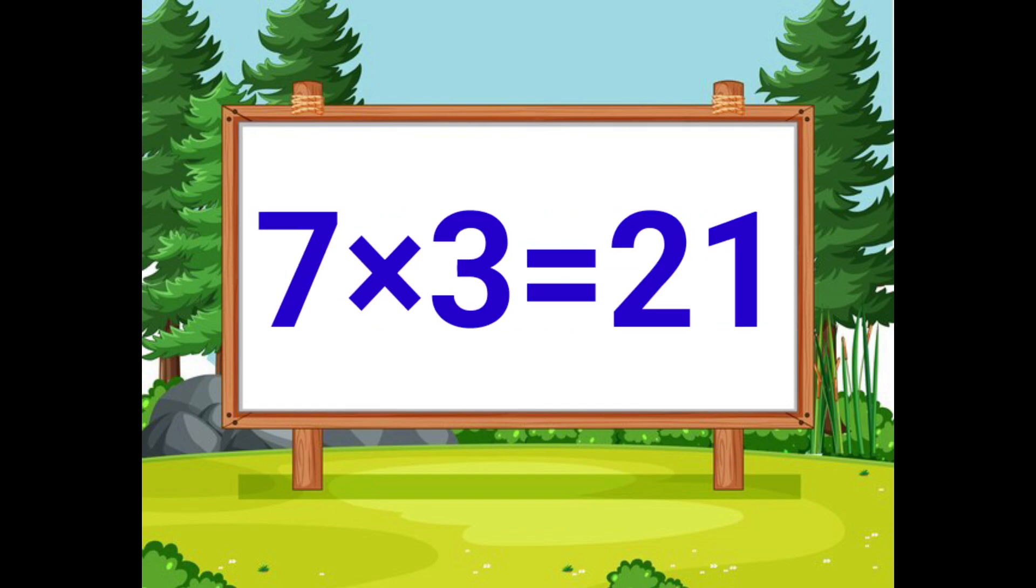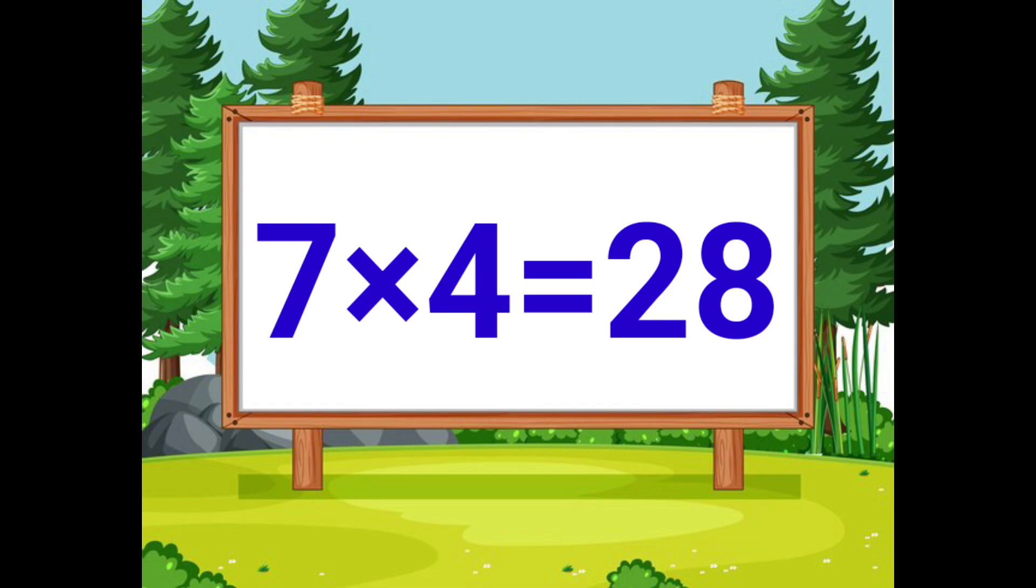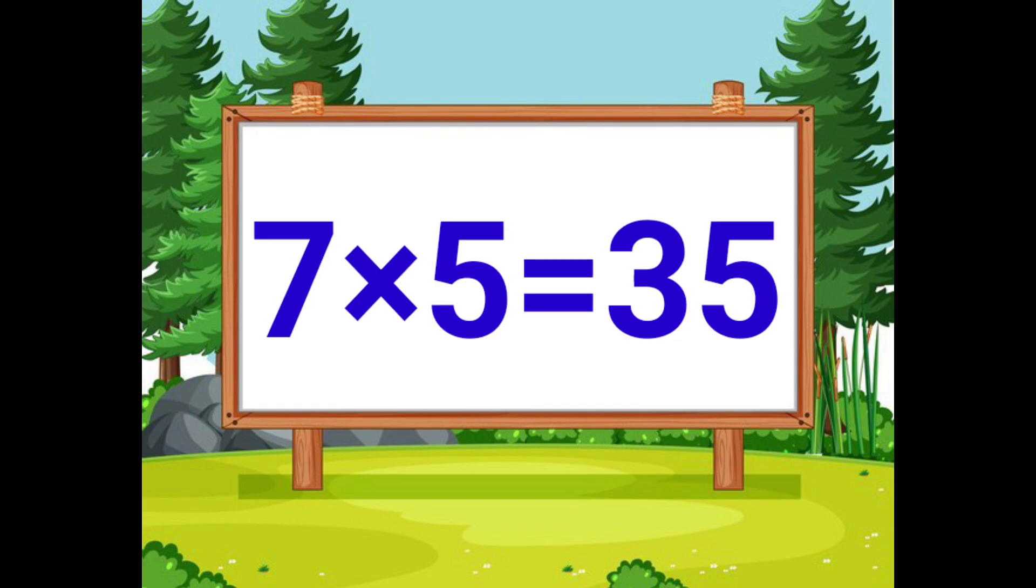7 threes are 21. 7 fours are 28. 7 fives are 35.